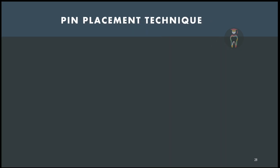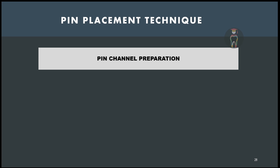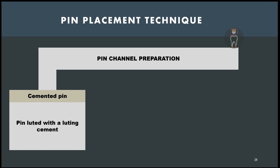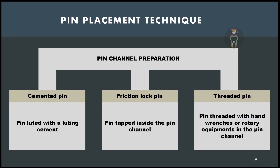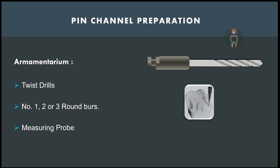For the pin placement technique: first, prepare the pin channel. After that, the procedure differs for the three pin types. For a cemented pin, the pin is cemented with a luting cement. For a friction lock pin, the pin is tapped inside the channel. For threaded pins, hand wrenches or rotary equipment are used to thread the pin inside the pin channel.